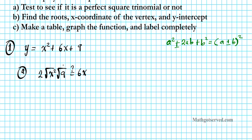Let's simplify the left side completely and see if we have a true statement. We have 2 times the square root of x squared, which is x, and the square root of 9 is 3. Is 2 times x times 3 equal to 6x? 2 times 3 is 6, and 6x equals 6x — absolutely. So it checks out; we have a perfect square trinomial.